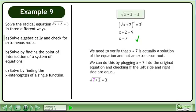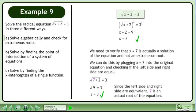Plug 7 into the original equation. Add the numbers within the radical to get the square root of 9 equals 3. This gives us 3 equals 3. Since the left side and right side are equivalent, 7 is an actual root of the equation.